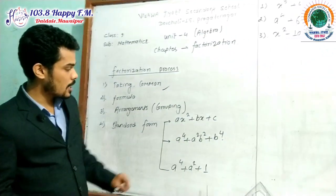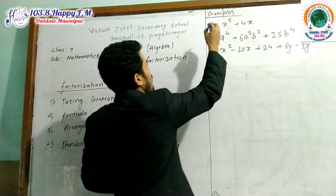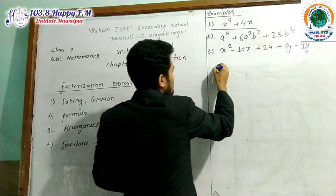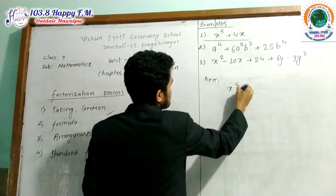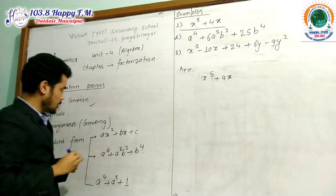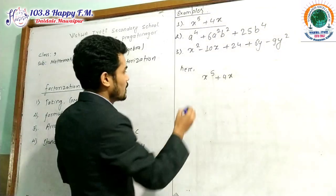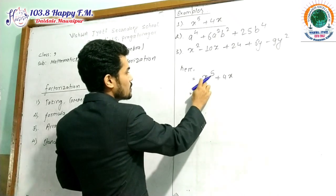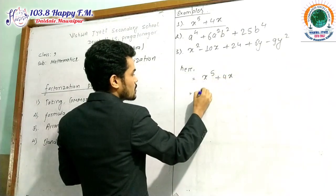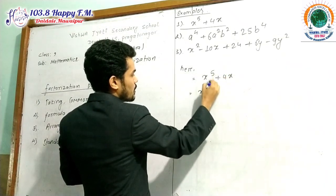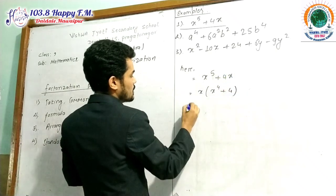So let us understand this factorization process by seeing some examples. Example number 1: x to the power 5 plus 4x. As you can see from the steps of factorization, the first step is taking common. In x⁵ + 4x, what is common here? The x is common. We can take x common, then there remains x to the power 4, and since x is already taken as common, here remains only 4.